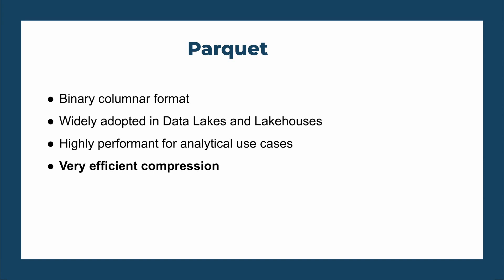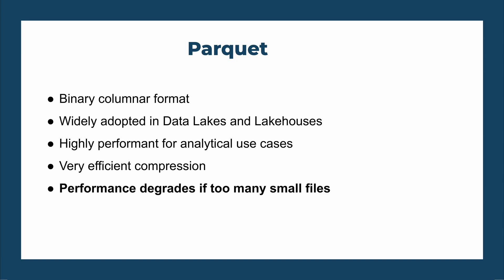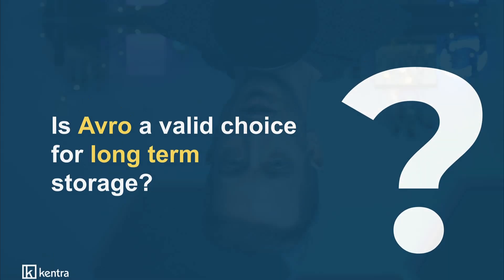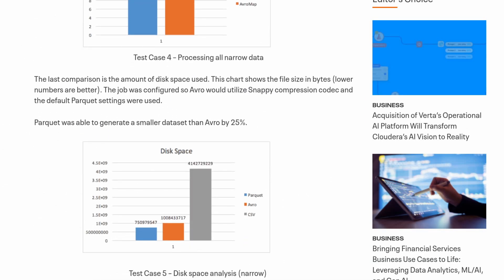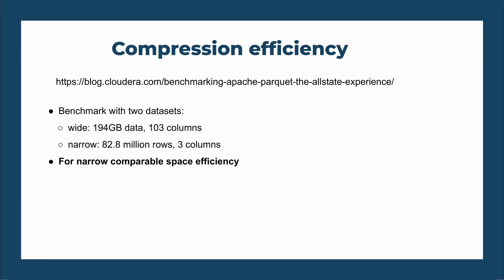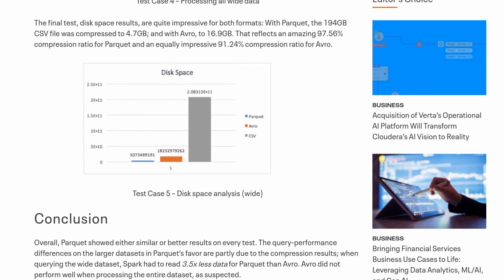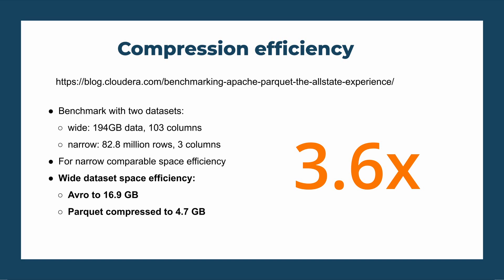Parquet is extremely efficient at compression for wide data sets. To compare, I looked at an article benchmarking compression efficiency of Avro and Parquet across two data sets: a wide one and a narrow one. For the narrow data set, the difference was present but not game-changing — the Avro file was 33% larger than the Parquet file. But for the wide data set the difference was massive: a 194 gigabyte CSV file was compressed to 16.9 gigabytes in Avro but only 4.7 gigabytes in Parquet. This means the Avro file was 3.6 times the size of the Parquet file.